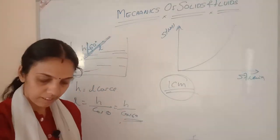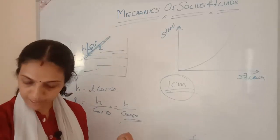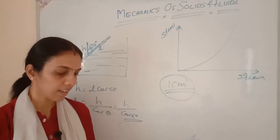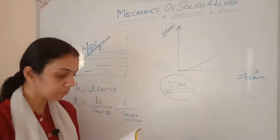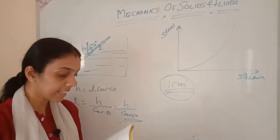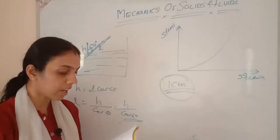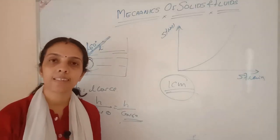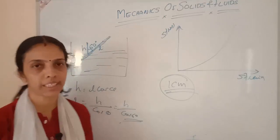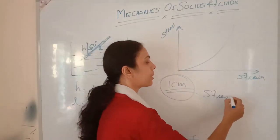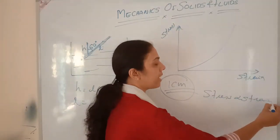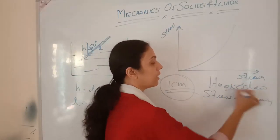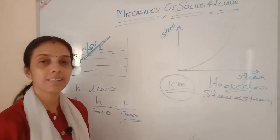Write the ideal gas equation: PV = nRT. Write any four postulates of kinetic theory of gases — already covered. Name the law relating to stress and strain: stress is directly proportional to strain within the elastic limit. That is called Hooke's law.